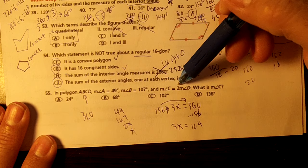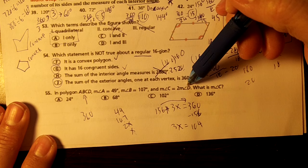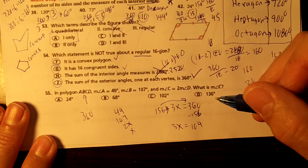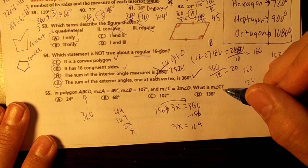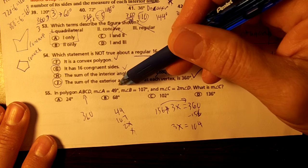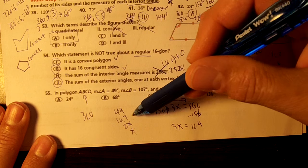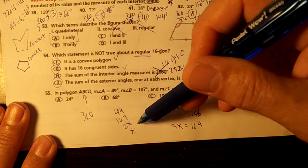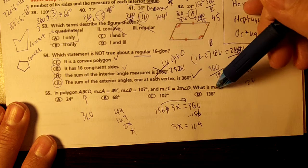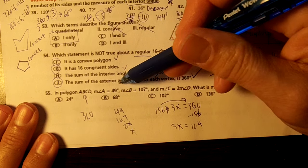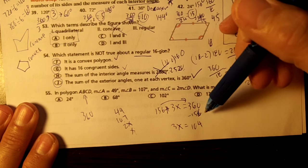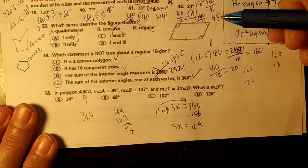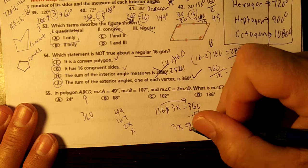The measure of angle C is twice the measure of angle D. What's the measure of angle C? 49 plus 107 is 156. Take away from 360, that's 204. Sorry about that.